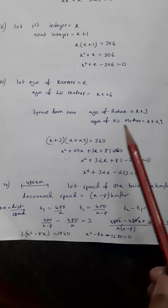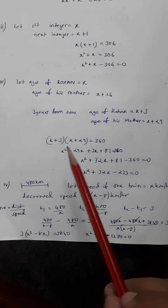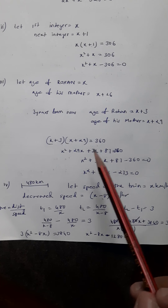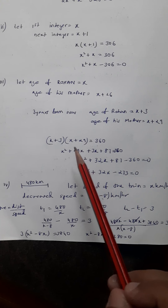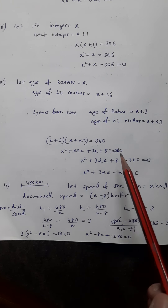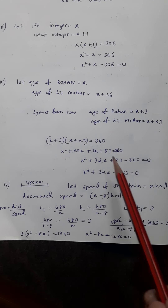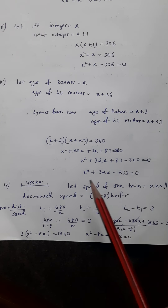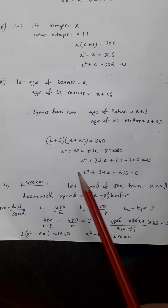The product of their ages after three years is given as 360. So x plus three into x plus 29 equals 360. Opening the bracket: x squared plus 29x plus 3x plus 87 equals 360. Combining: x squared plus 32x, and 360 comes to this side as minus 360, giving the quadratic x squared plus 32x minus 273 is zero.